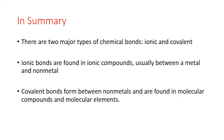In summary, there are two major types of chemical bonds: ionic and covalent. Ionic bonds are found in ionic compounds, usually between a metal and a nonmetal, and ionic compounds form large crystal lattices. Covalent bonds form between nonmetals and are found in molecular compounds and molecular elements.